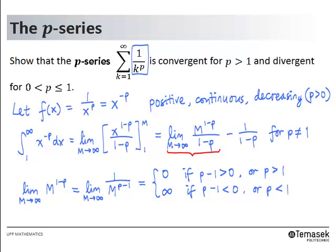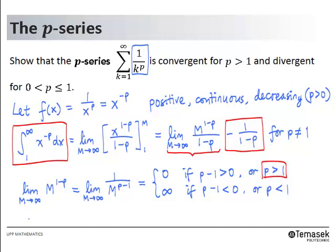Hence, we conclude that the improper integral is convergent and equals negative 1 over 1 minus p if p is greater than 1, and divergent to infinity for p less than 1. Thus the result for the p-series follows from the integral test.